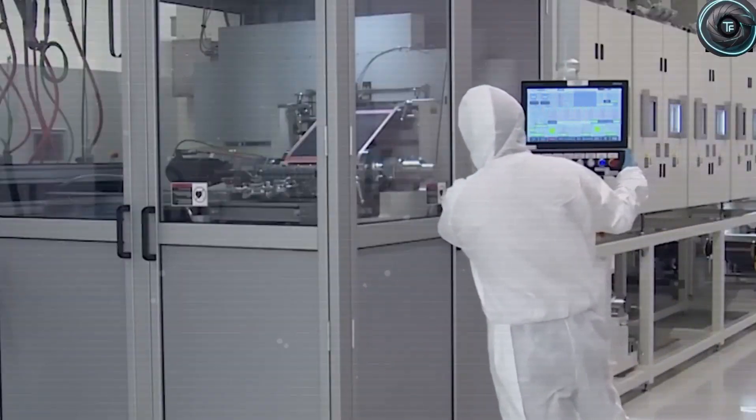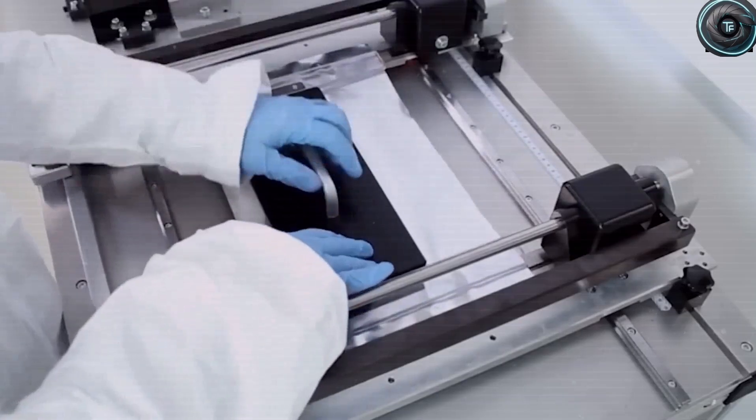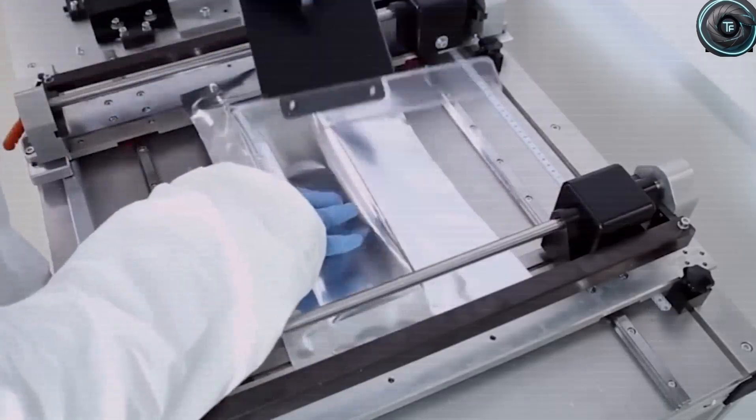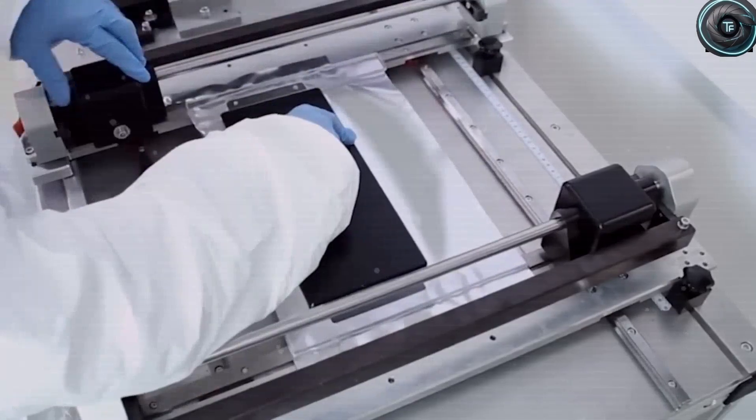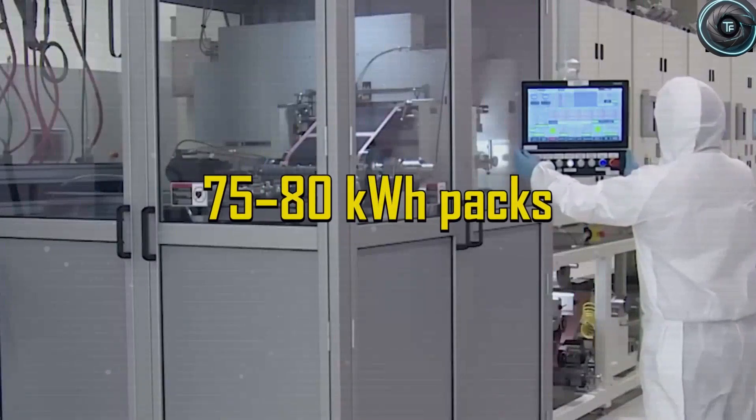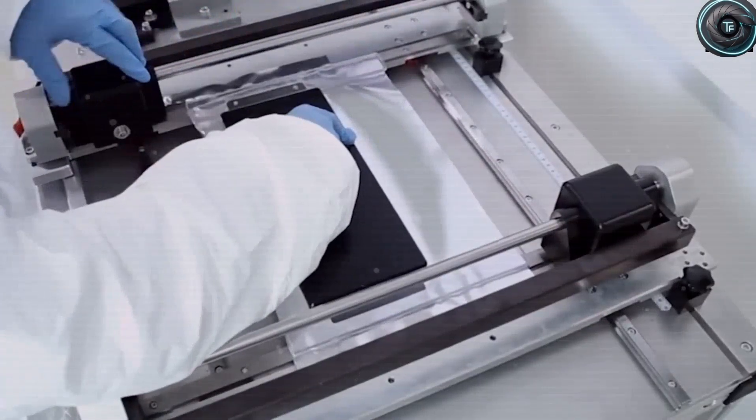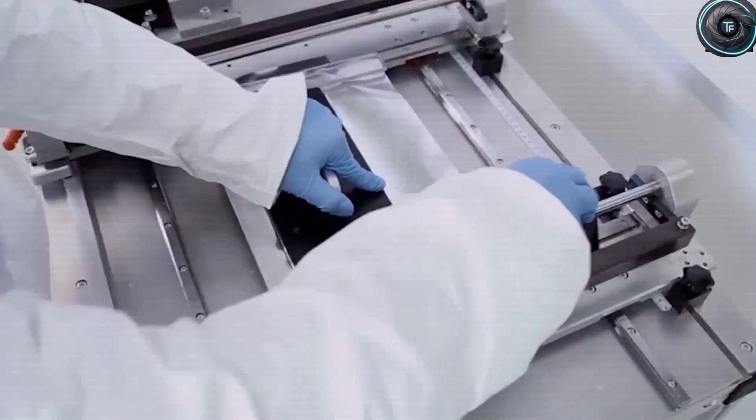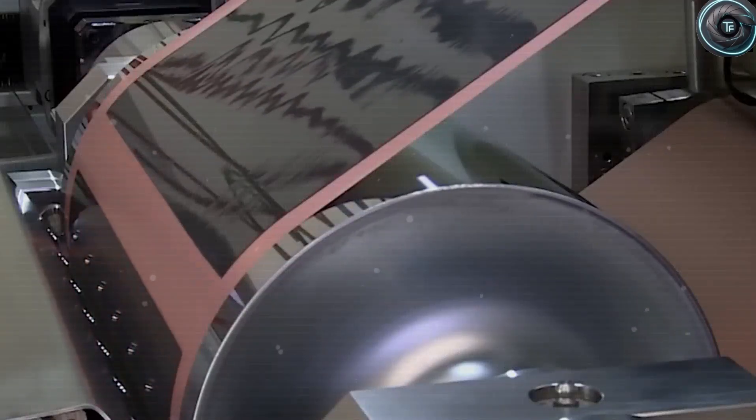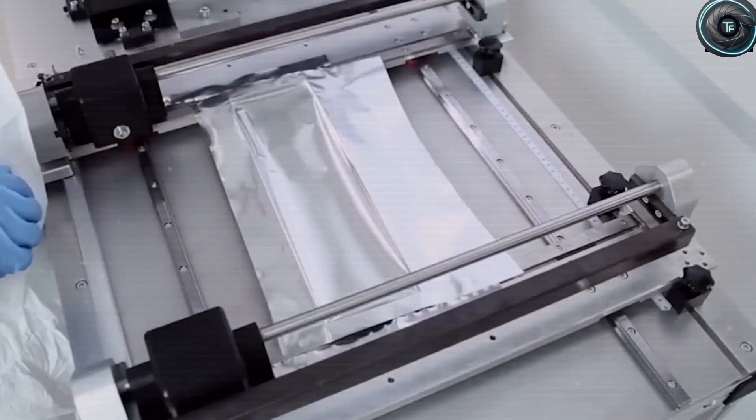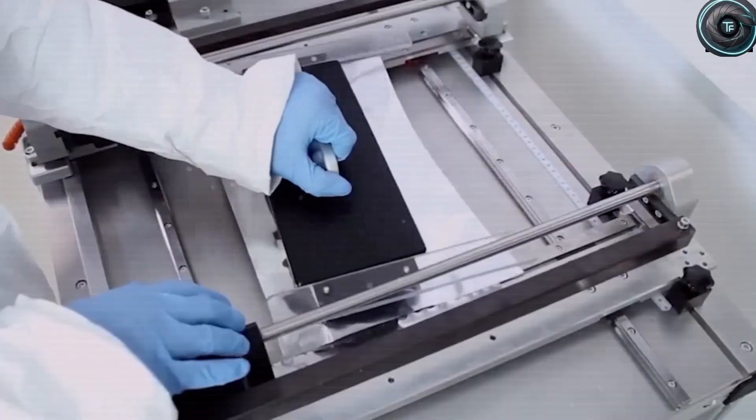That approach would allow the Tesla Model 2 to benefit from mass production efficiencies early on while maintaining consistent quality across every single pack. Cost projections suggest that as Tesla optimizes its supply chain and leverages the fact that sodium is far more abundant than lithium, the per-pack cost could drop significantly compared with current solutions.